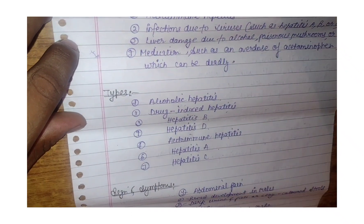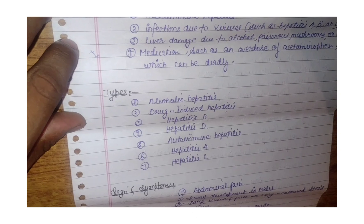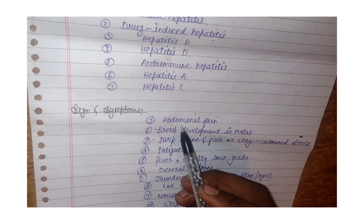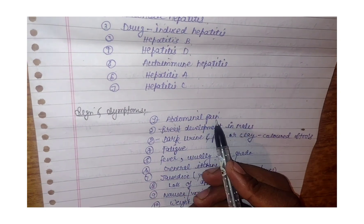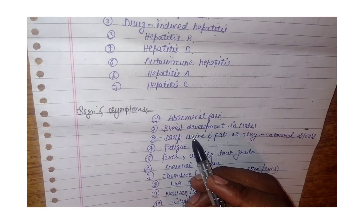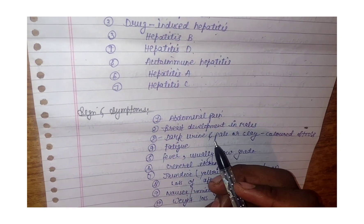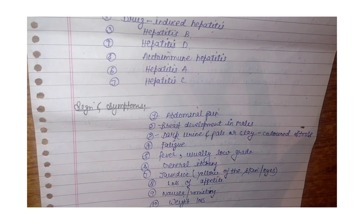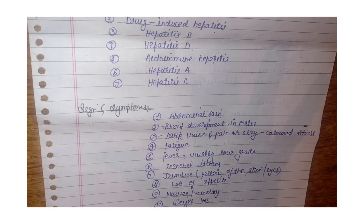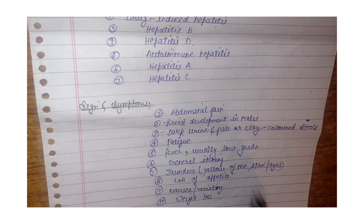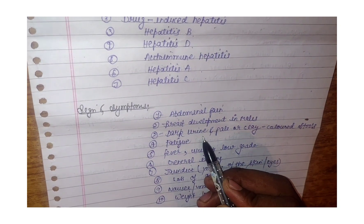Signs and symptoms include: abdominal pain, breast development in males, and dark urine.